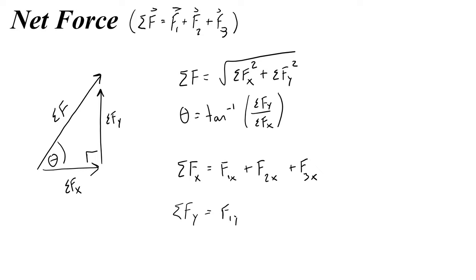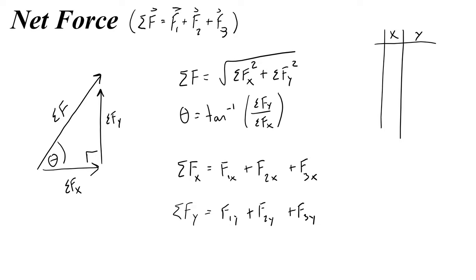Sometimes it will be helpful to separate the x and the y components. So if I have vectors F1, F2, F3, I'm probably going to find the sum of their x components by looking at F1x plus F2x plus F3x, and the same thing for y: F1y plus F2y plus F3y. We can always write an x and y chart for all of our vectors to help us organize those values. So let's do an example.